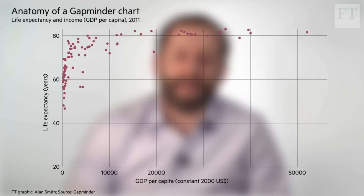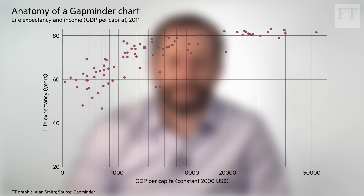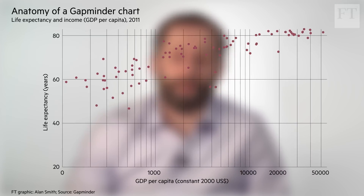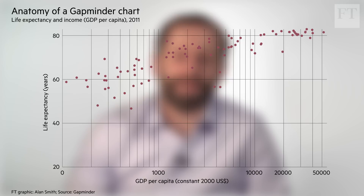So what can we do to fix this? Rosling cleverly transformed the x-axis scale to a log scale chart. By doing so, we can now see the variations in lower income countries that were previously hidden. And in fact, we can see variations between the countries at all income levels.